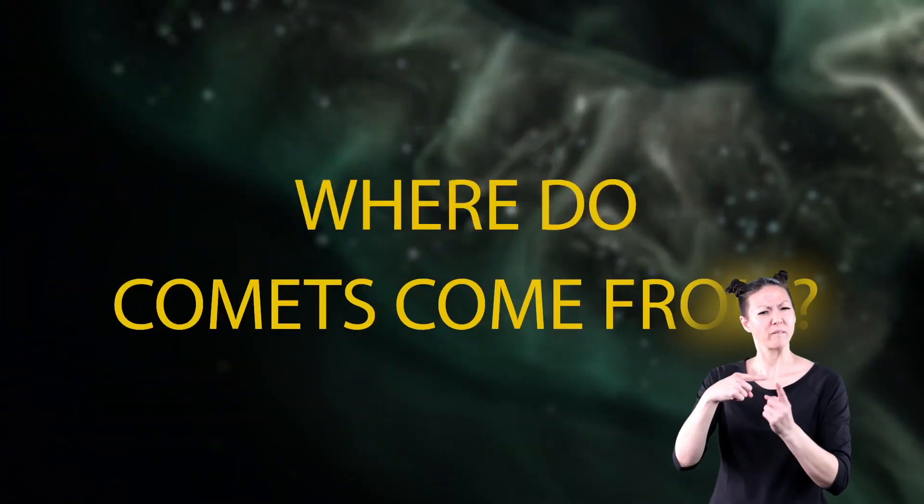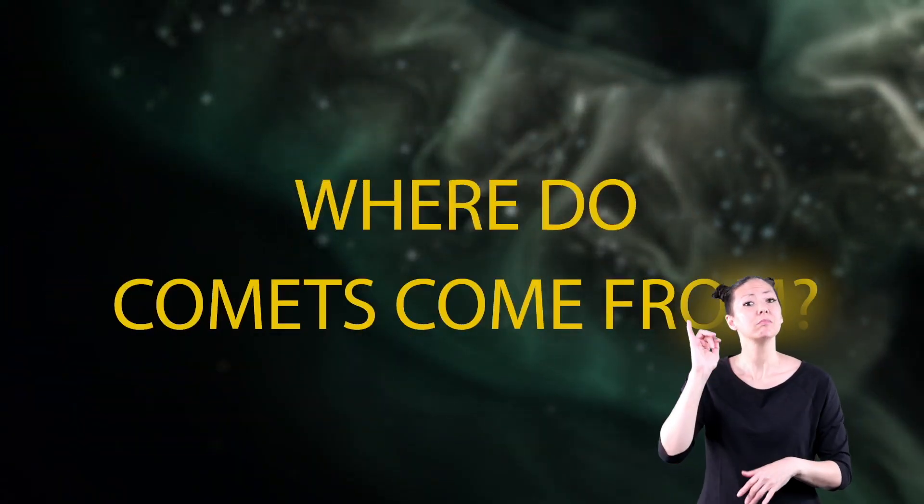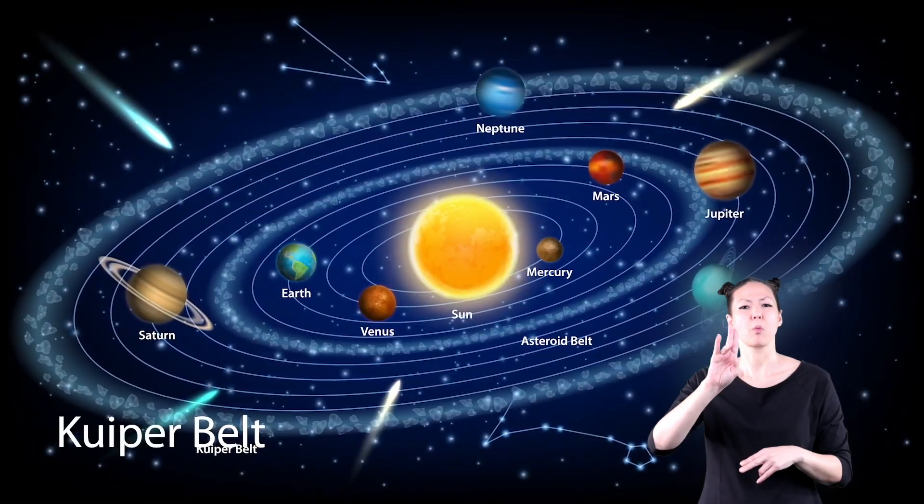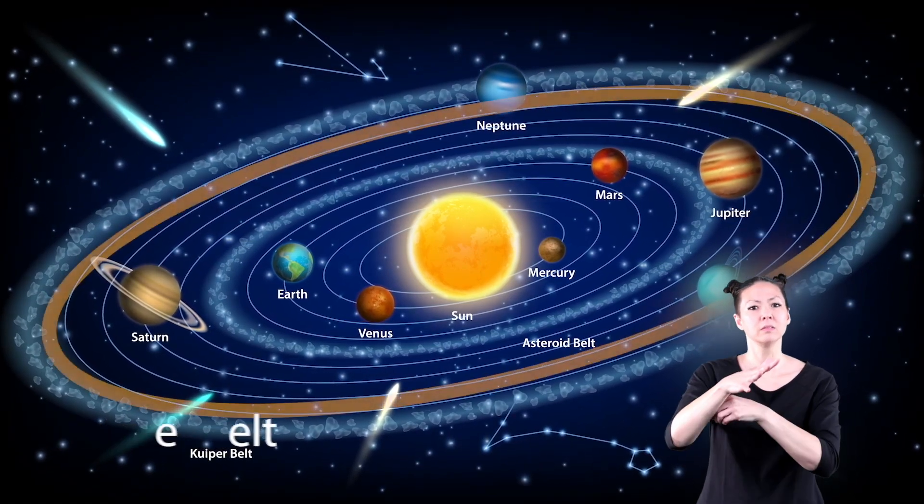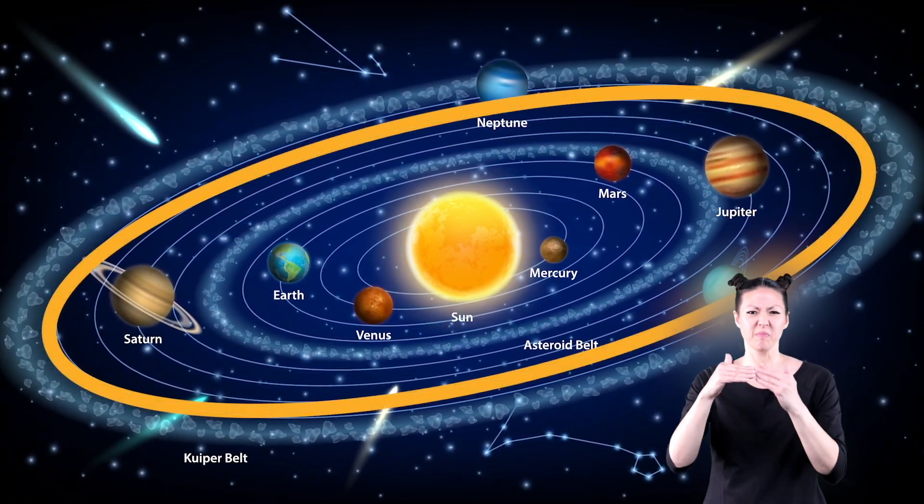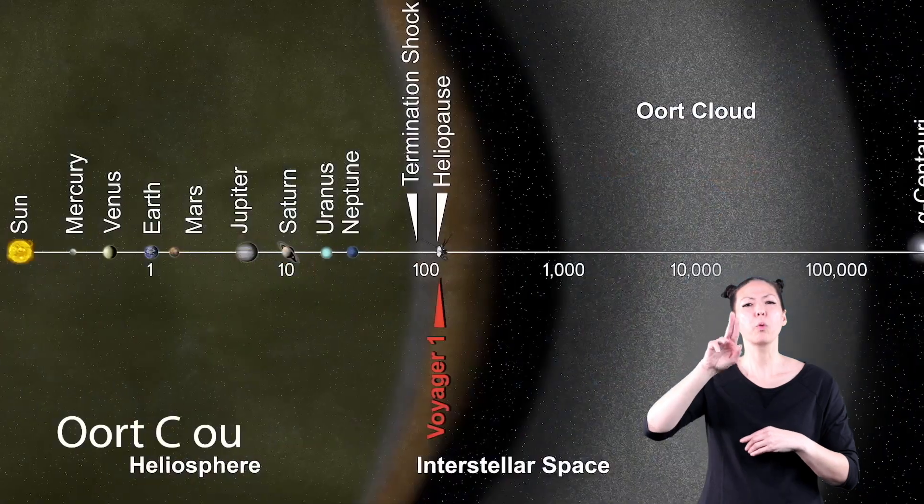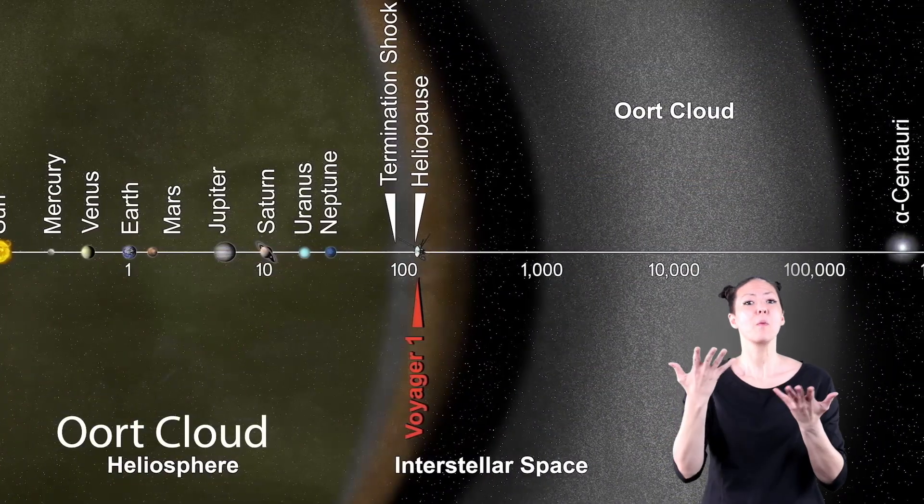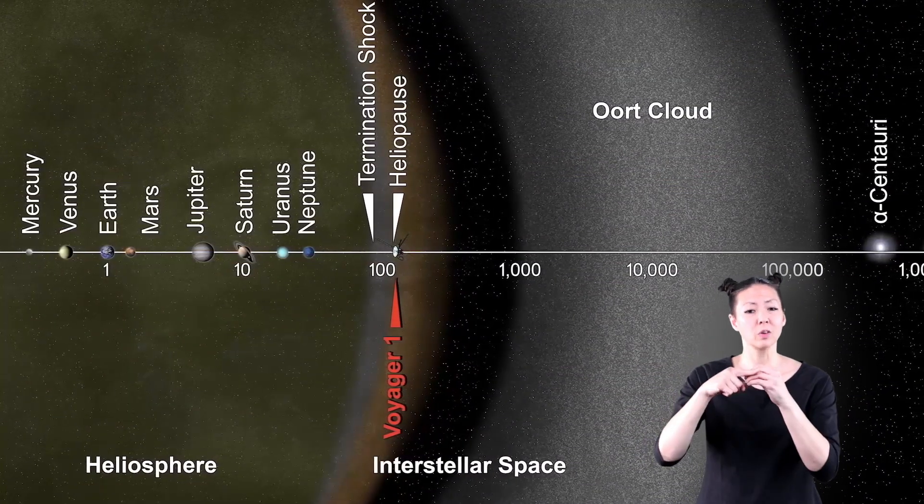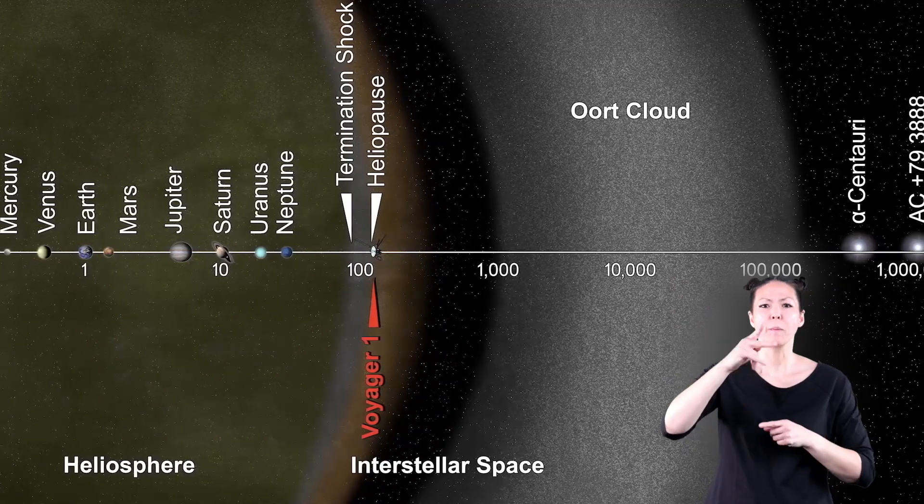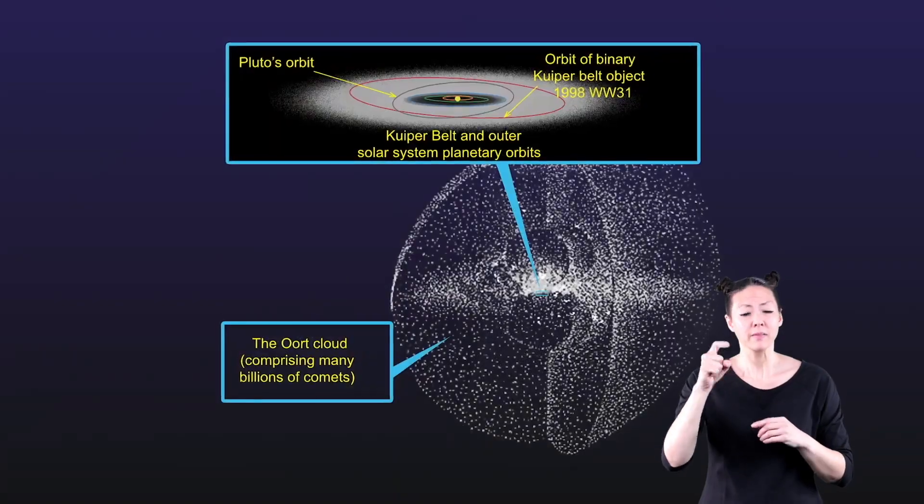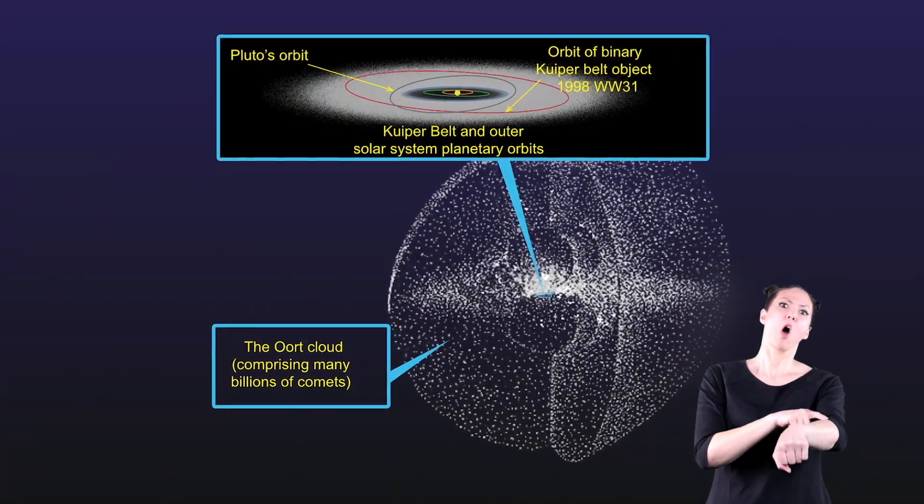Where do comets come from? Comets come from two places in the solar system. The first place is called the Kuiper Belt. The Kuiper Belt is just beyond the orbit of Neptune. The second place is called the Oort Cloud. This region is farther out than the Kuiper Belt. So comets from this region take longer to orbit the sun.